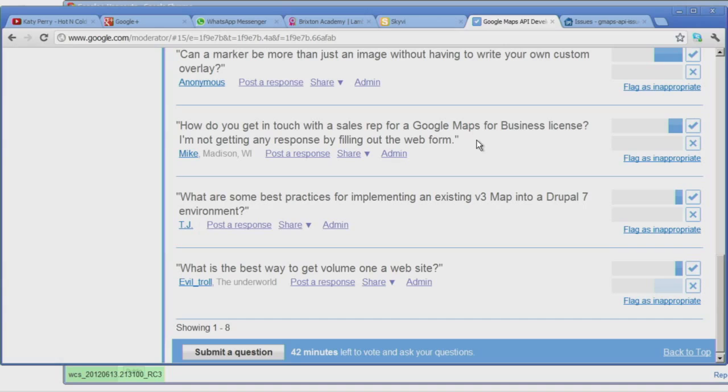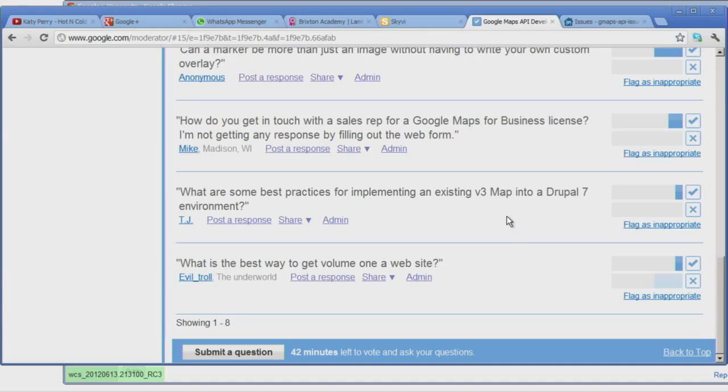A question about how to get in touch with a Google Maps for business sales rep. If you're having trouble, just ping me off. Just share a post with your contact info with me on Google Plus and I'll forward that on to the sales folks. What are some best practices for implementing an existing V3 map into a Drupal 7 environment? I have no idea. Not a Drupal person at all. So no Drupal folks on that. Sorry about that.